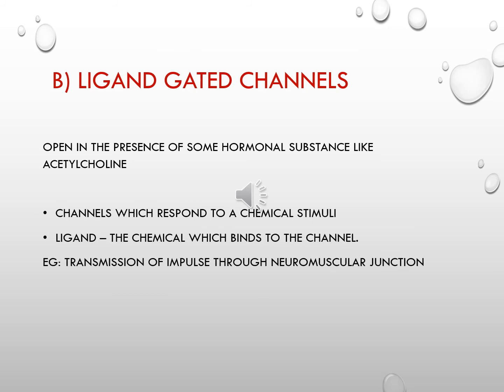Next are ligand-gated channels — channels which operate in the presence of some hormonal or chemical substances. They respond to chemical stimuli, and a ligand is the chemical substance which binds to the channel. For example, in the transmission of impulses through the neuromuscular junction — the junction between a nerve and a muscle — at the axon terminal in the presynaptic membrane there are vesicles containing acetylcholine. When impulses reach the axon terminal, these vesicles break and acetylcholine is released.